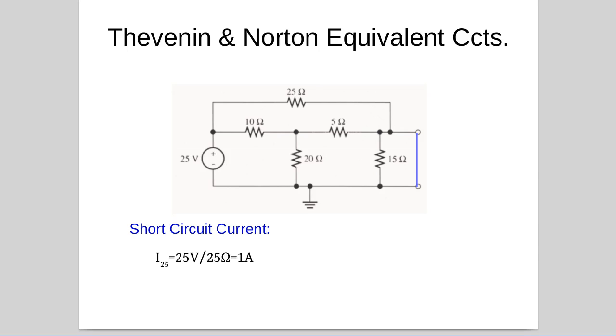Now we want to analyze the component of the current in the short circuit due to the rest of the resistor network, the 10 ohm, the 20 ohm, the 5 ohm and the 15 ohm. Now the 15 ohm actually plays no part because the short circuit across it means no current will flow in it. So we need to analyze the rest of this as a series parallel resistor network.